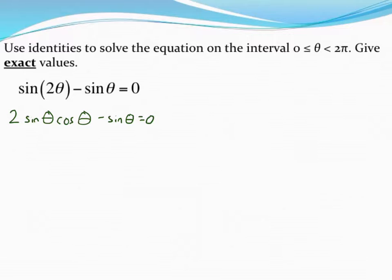If I think back to factoring, this term and this term both have something in common. In fact, they both have just a sine in them. So what I can do is I can factor out a greatest common factor, that's the sine of theta. If I take that out, what's left is two times cosine of theta minus just one.